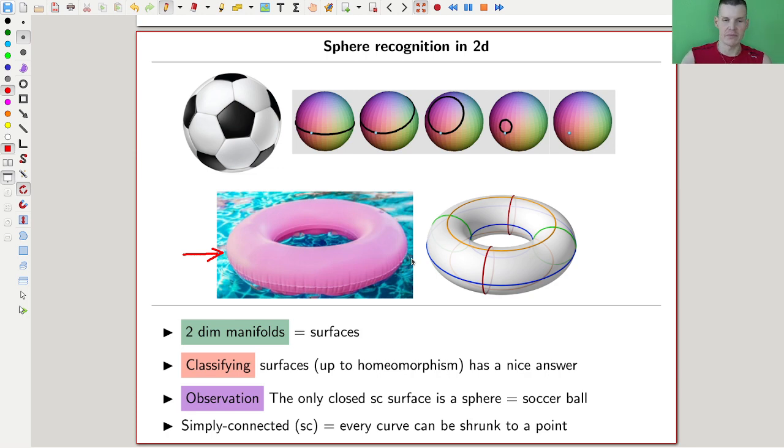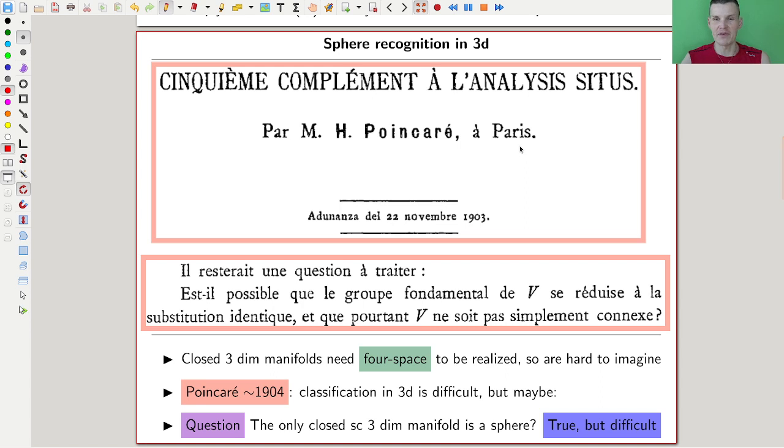Poincaré thought about this in a famous series of papers which goes under analysis situs. It was a series of papers. I'm looking at the one from 1903. Poincaré asked a famous question—it's not a conjecture, Poincaré asks the question, but people call it the Poincaré conjecture anyway.